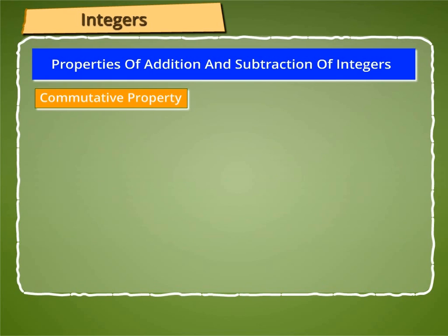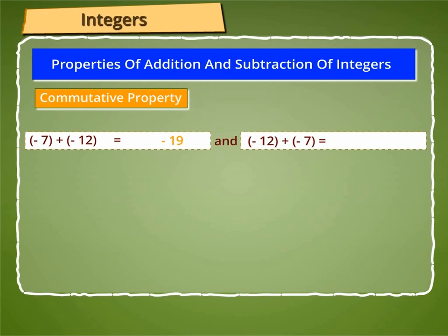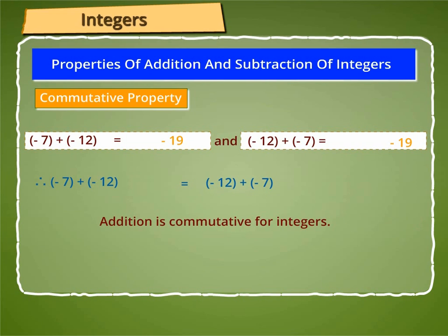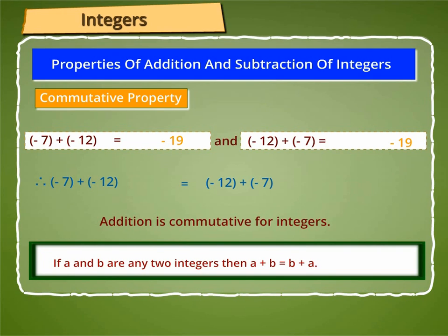The next property is the Commutative Property. As we know, minus 7 plus minus 12 is equal to minus 19, and minus 12 plus minus 7 is equal to minus 19. Therefore, minus 7 plus minus 12 is equal to minus 12 plus minus 7. Thus, addition is commutative for integers. Hence, if A and B are any two integers, then A plus B is equal to B plus A.